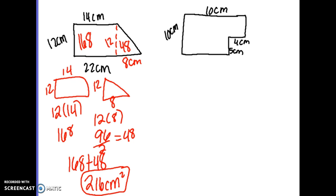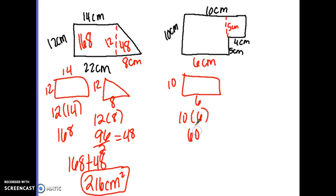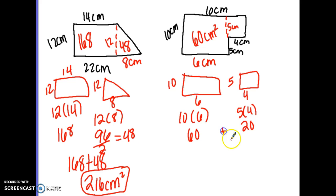For the next one, I cut to make a small rectangle and a larger rectangle. If the whole top is 10 and this part is 4, then the bottom is 6 centimeters. The large rectangle is 10 by 6, which has an area of 60. The smaller one is 5 by 4, which has an area of 20. Adding them together gives 80 square centimeters.